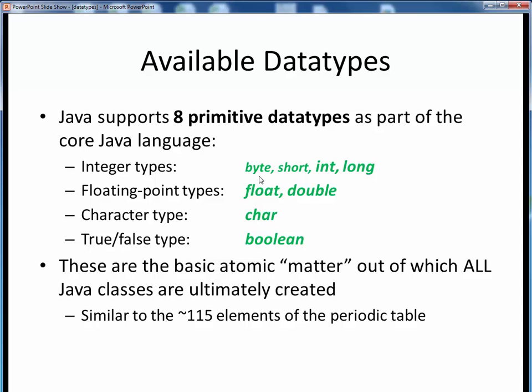Java supports two floating point data types, float and double. These data types are used to store more precise numbers requiring decimal precision and or exponents. Java's character data type is char, which is used to store single characters. And finally, Java's data type to store binary-valued true or false data is Boolean. And that's it.